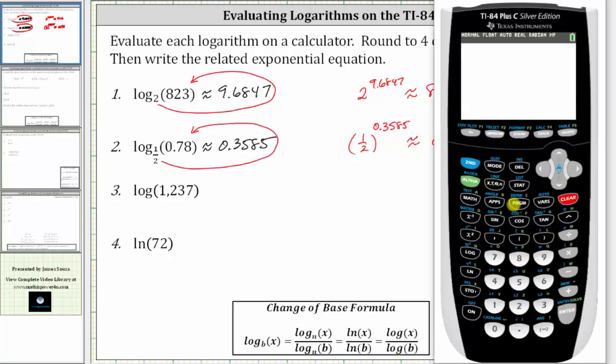The related exponential equation is one-half raised to the power of 0.3585 is approximately 0.78. Let's verify this. Notice how we do get approximately 0.78.